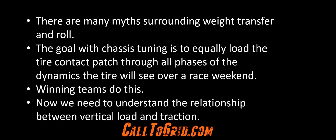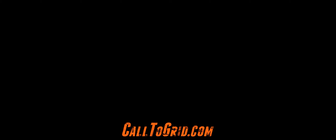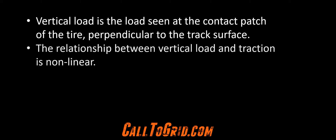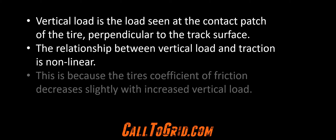Now we need to understand the relationship between vertical load and traction. Vertical load is the load seen at the contact patch of the tire, perpendicular to the track surface. More load means more grip, less load means less grip. The relationship between vertical load and traction is non-linear, because the coefficient of friction will decrease as vertical load is increased.